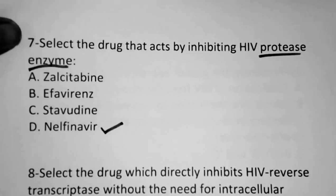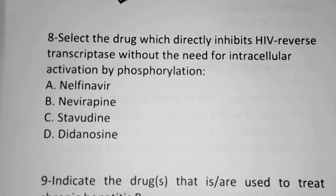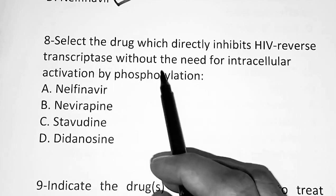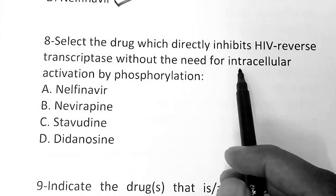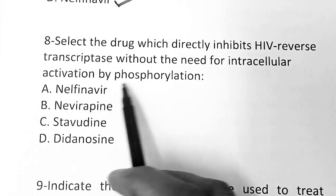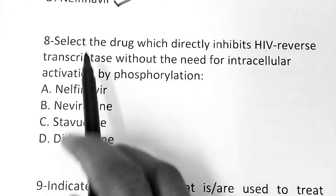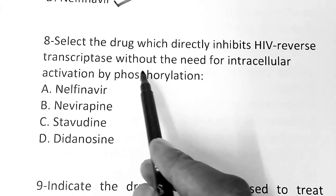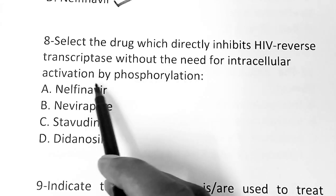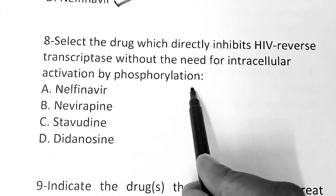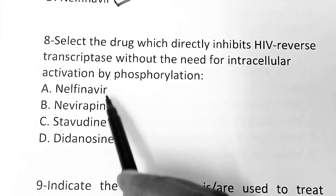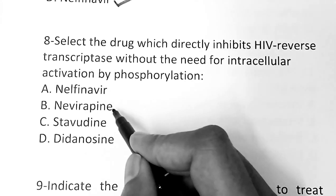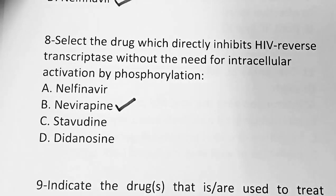Question 8: Select the drug which directly inhibits HIV reverse transcriptase without the need for intracellular activation by phosphorylation. Options are: nelfinavir, nevirapine, stavudine, didanosine. The correct answer is nevirapine.